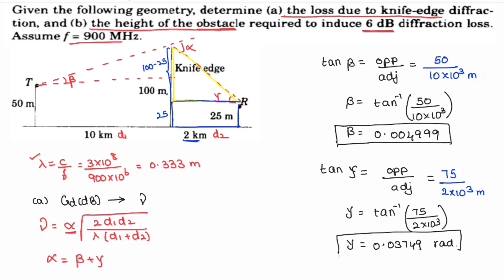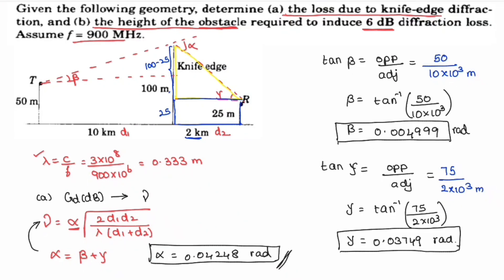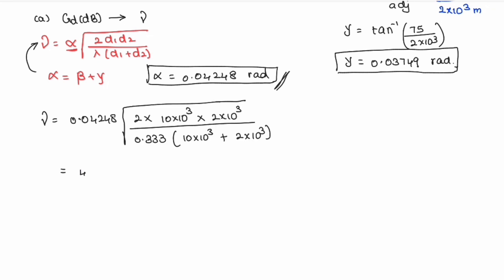The unit of alpha, beta, and gamma must be in radians. Alpha equals beta plus gamma, so alpha equals 0.004999 plus 0.03749, giving alpha equals 0.04248 radians. Now substituting alpha, lambda, D1, and D2 into the V formula, we get V equals 4.24.